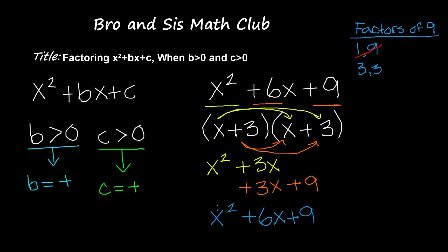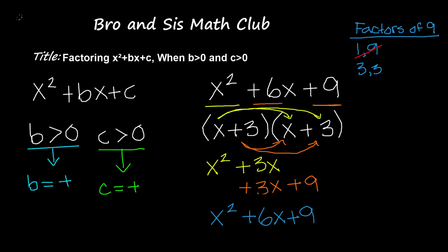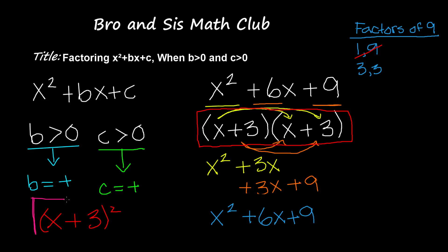And that is the trinomial that we started off with — so this checks out. Actually, to be clear, the factored answer is x plus 3 times x plus 3, or you can simply write it as x plus 3 squared. I'm going to go ahead and highlight that in a box so we know that is the answer.